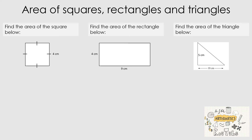Let's work through some examples for finding the area of squares, rectangles, and triangles. For the first one, find the area of the square. We are given one measurement of 4 centimeters. With a square, all four sides are always equal, so we always begin with the formula. The area of a square is equal to l times l, or l squared, or length squared.